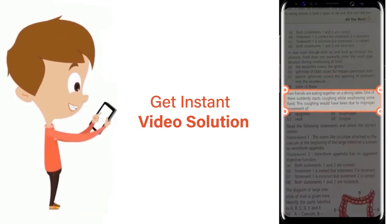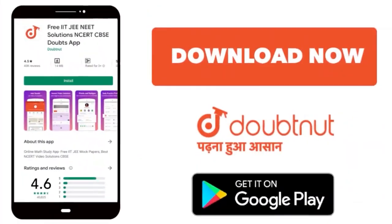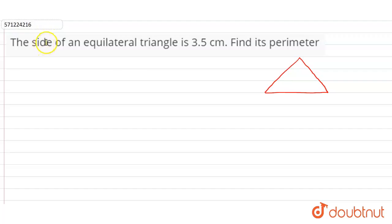Download Doubtnet app today. Hi students, our question is: the side of an equilateral triangle is 3.5 centimeters. Find its perimeter.